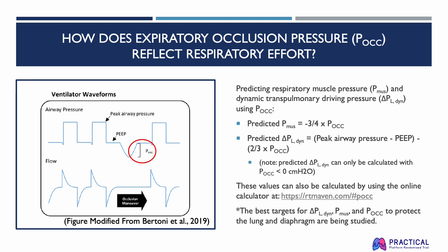For predicted respiratory muscle pressure, it is the product of minus 3 over 4 times PEOC. For the predicted dynamic transpulmonary driving pressure, you first find the difference between peak airway pressure minus PEEP, then subtract that by the product of 2 over 3 times PEOC. Please note that the predicted dynamic transpulmonary driving pressure can only be calculated with a PEOC of less than 0 centimeters of water. These values can also be calculated using the online calculator at rtmaven.com/#PEOC. The best targets for dynamic transpulmonary driving pressure, respiratory muscle pressure, and occlusion pressure for protecting the lung and diaphragm are still currently being studied.